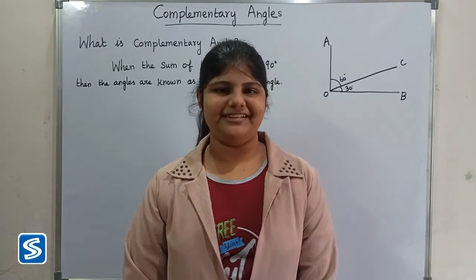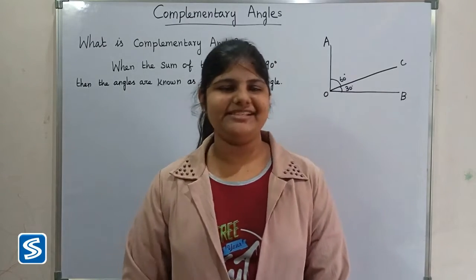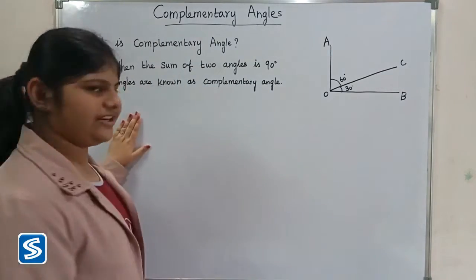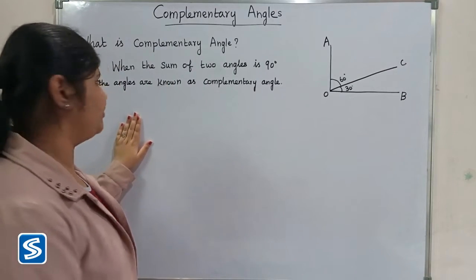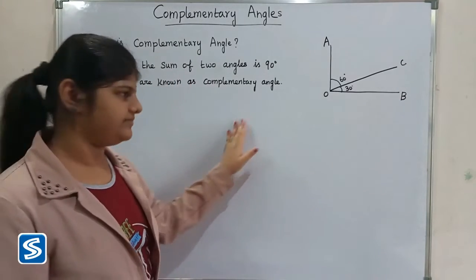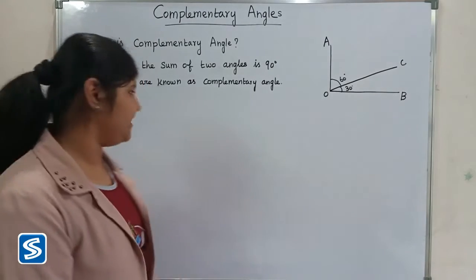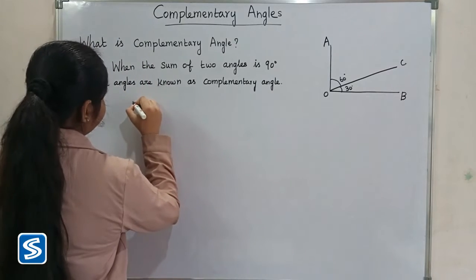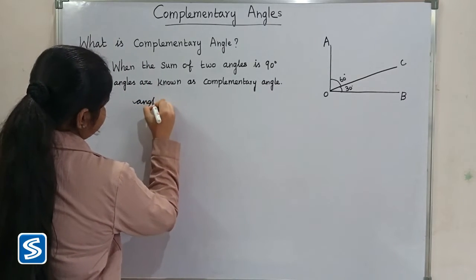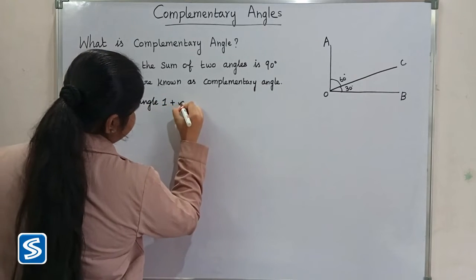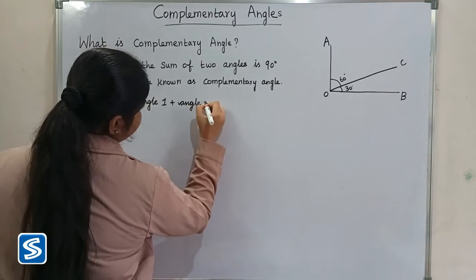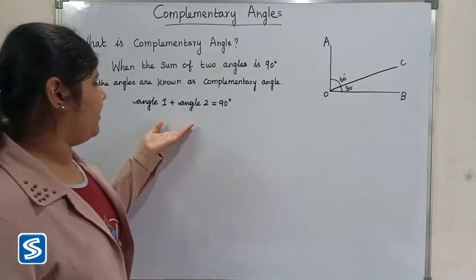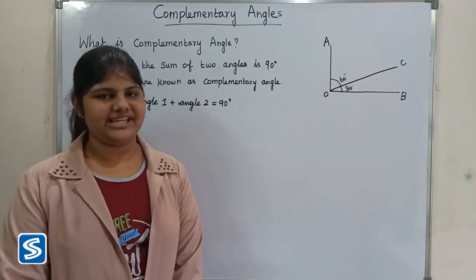Hi friends, welcome to this channel. In this video I am going to teach how to find complementary angles of a given angle. Before we go to the topic, we have to know what is meant by complementary angle. When the sum of two angles is 90 degrees, the angles are known as complementary angles — that is, angle one plus angle two is equal to 90 degrees. Angle one and angle two are the complementary angles of each other.